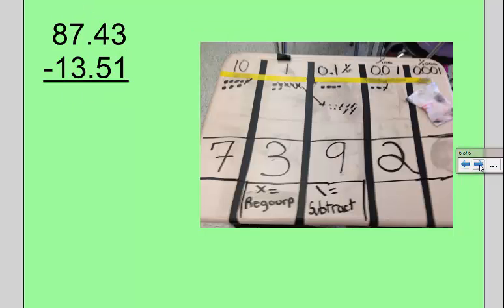Likewise, if we want to subtract from every place value, the same idea occurs. So I want to start in my hundredths place. If I have 3 hundredths and I take 1 away, that leaves me with 2 hundredths. I go to my tenths place and I run into that same problem.